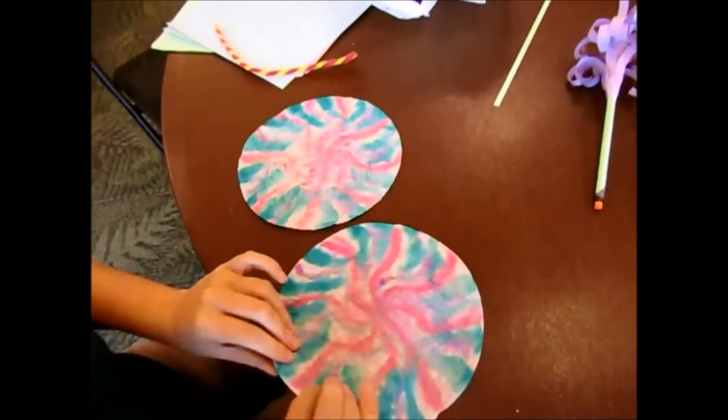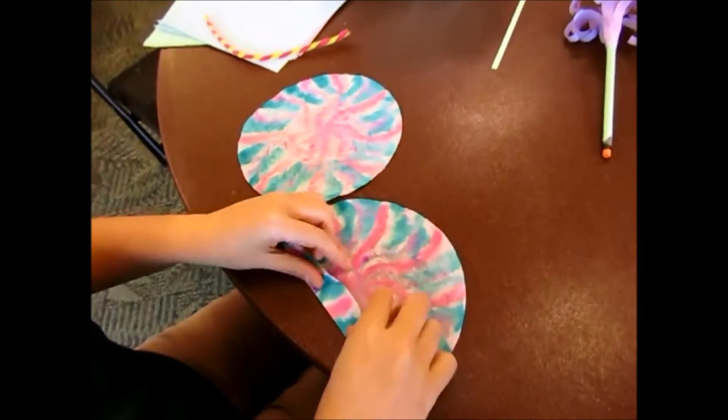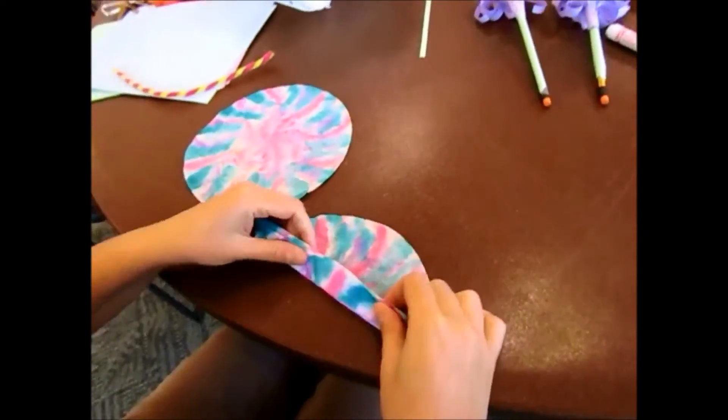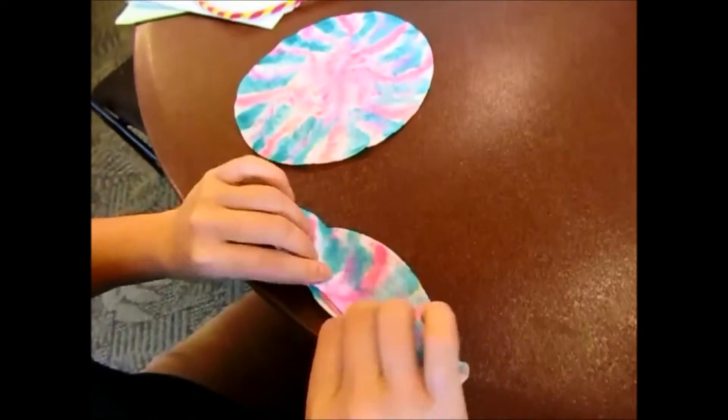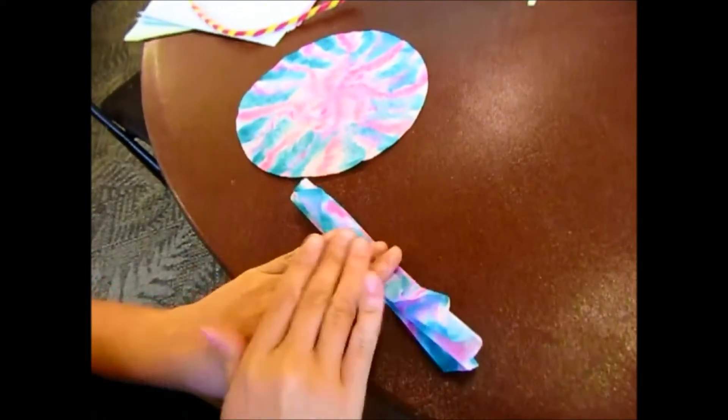After you let your filters dry, now we're going to go ahead and fold them to make the wings of the butterfly. So you just want to fold one corner, then flip it over and fold it the other way, flip it over, fold it the other way, and keep going all the way through the filter. You're going to